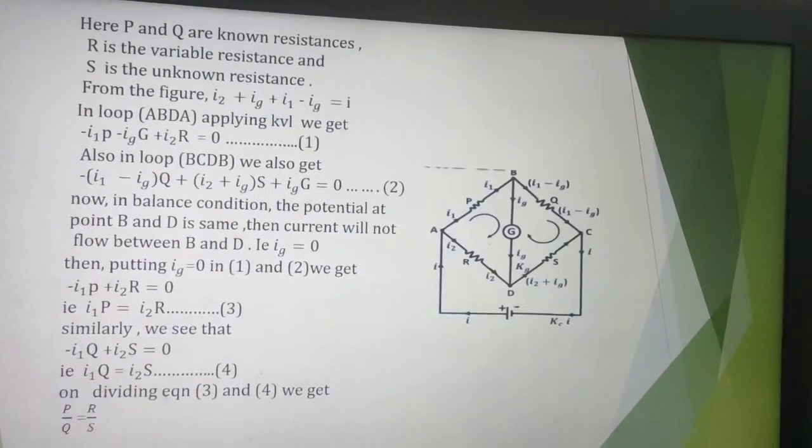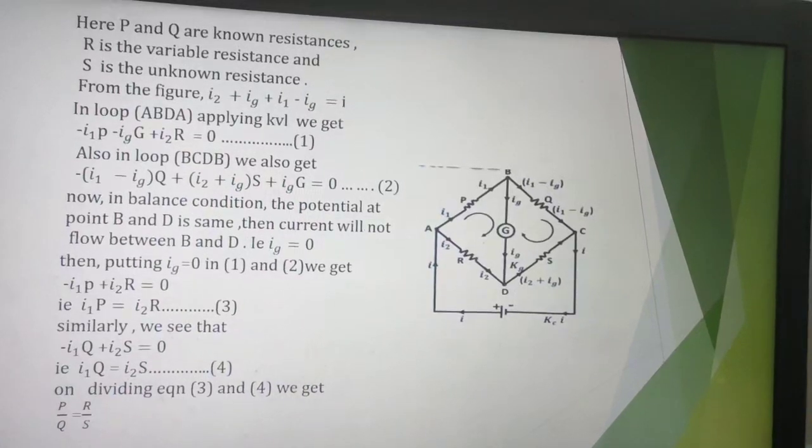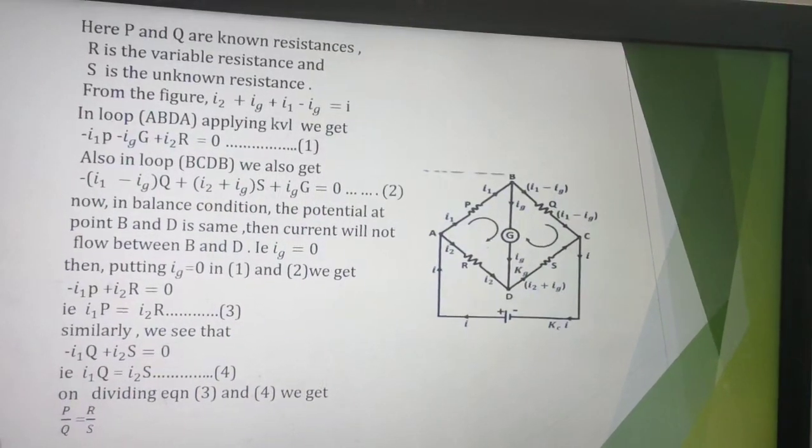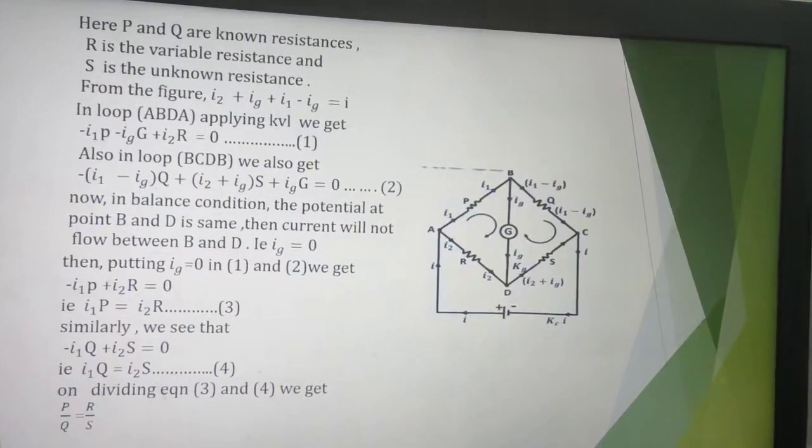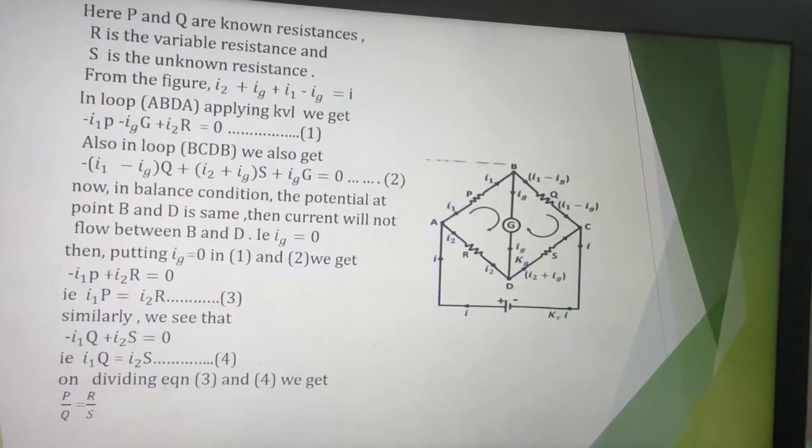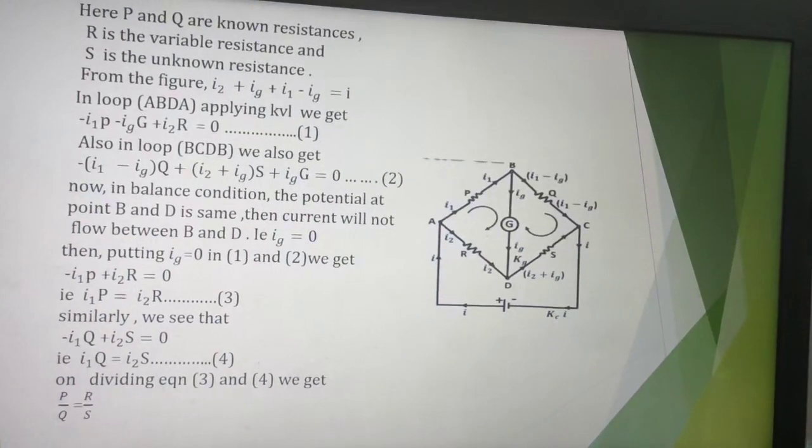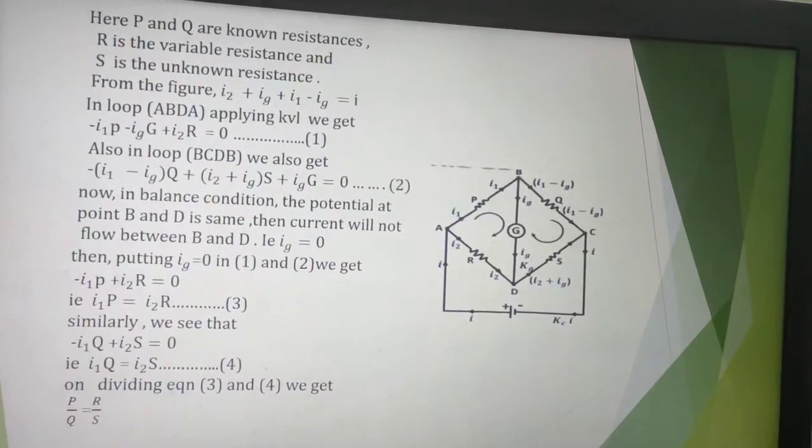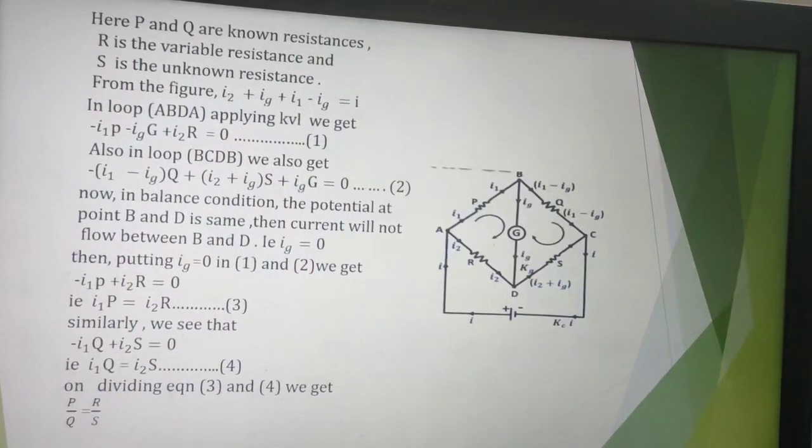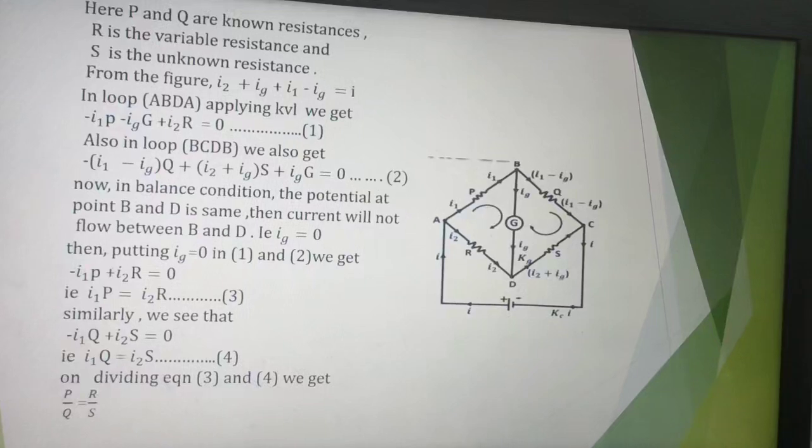Now when the galvanometer switch is on, let IG be the current passing through G. Then I1 minus IG is the current passing through Q. At junction D, I2 and IG add up, so I2 plus IG is the current passing through S.